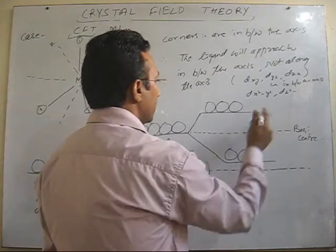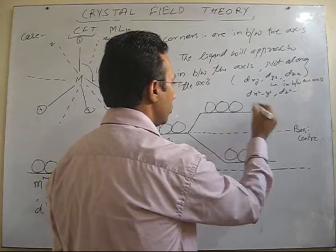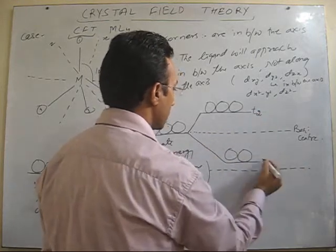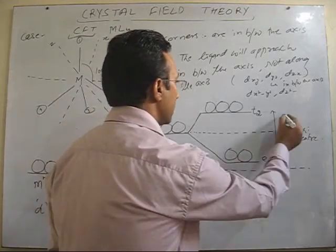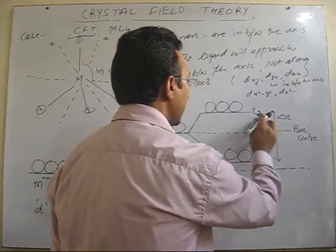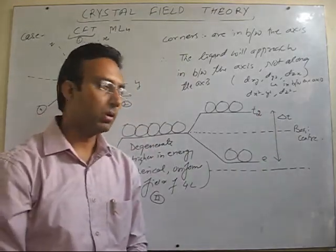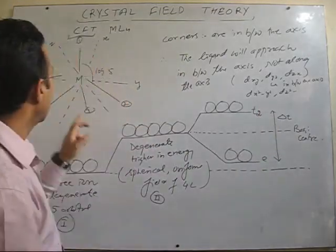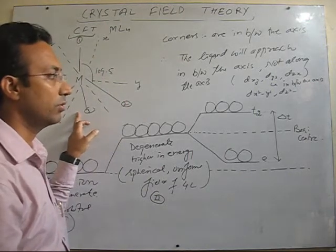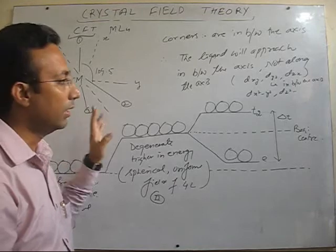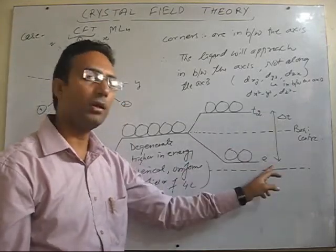This set of orbitals is called T2 and the other set is the E set, and the difference is delta T. I have not used the subscript 'g' because tetrahedral structures do not have a center of symmetry. As I have already told you, 'g' is used for structures having center of symmetry — for tetrahedral, 'g' will not be used.